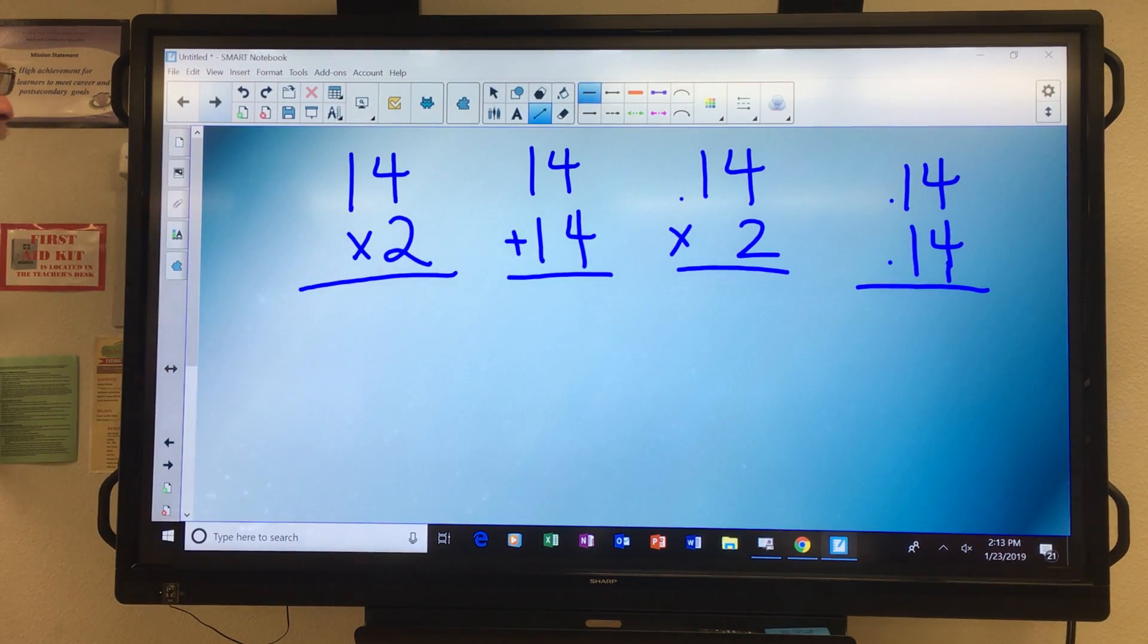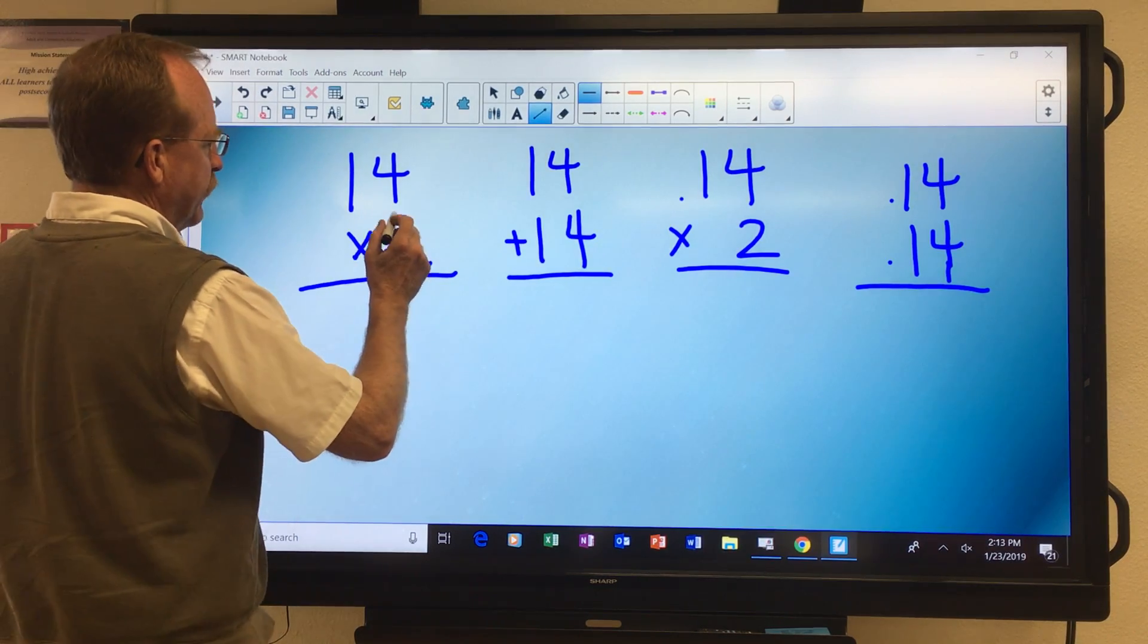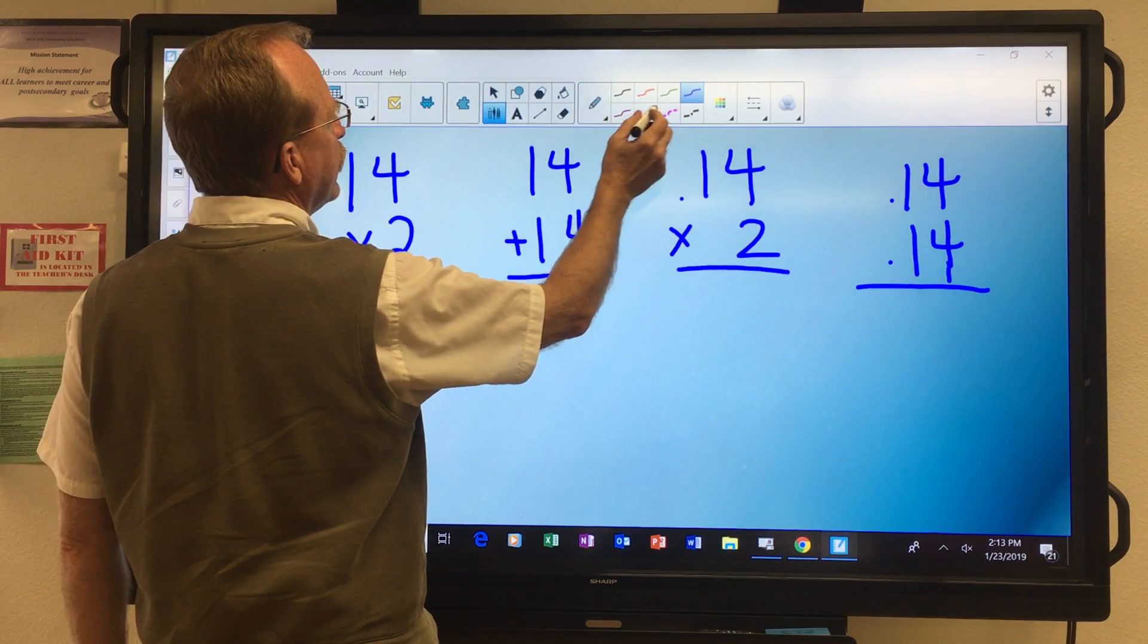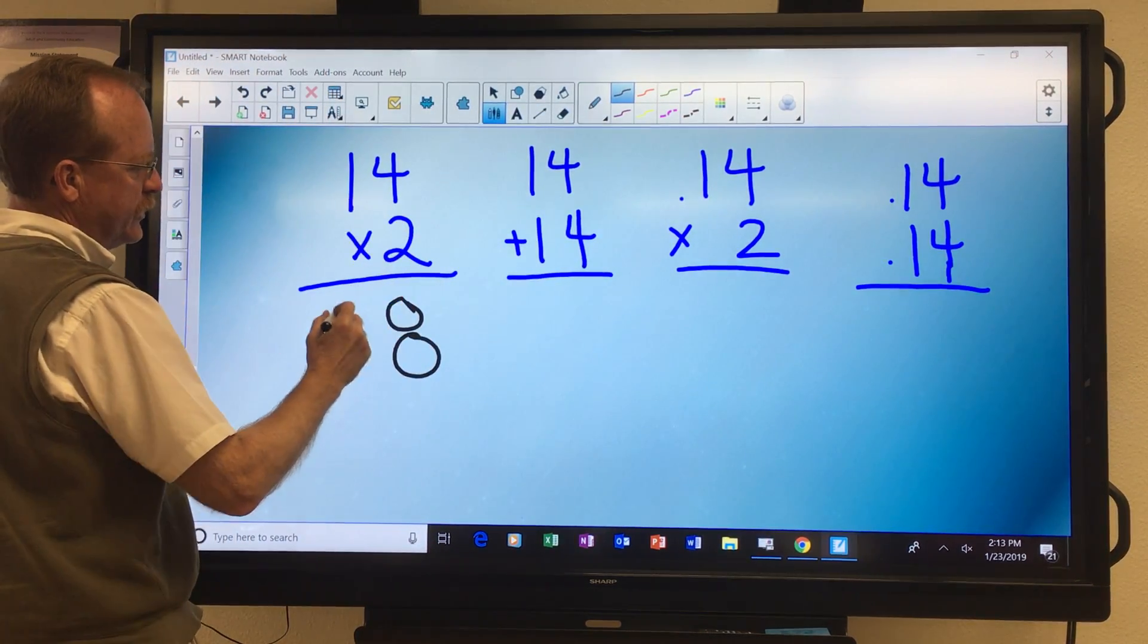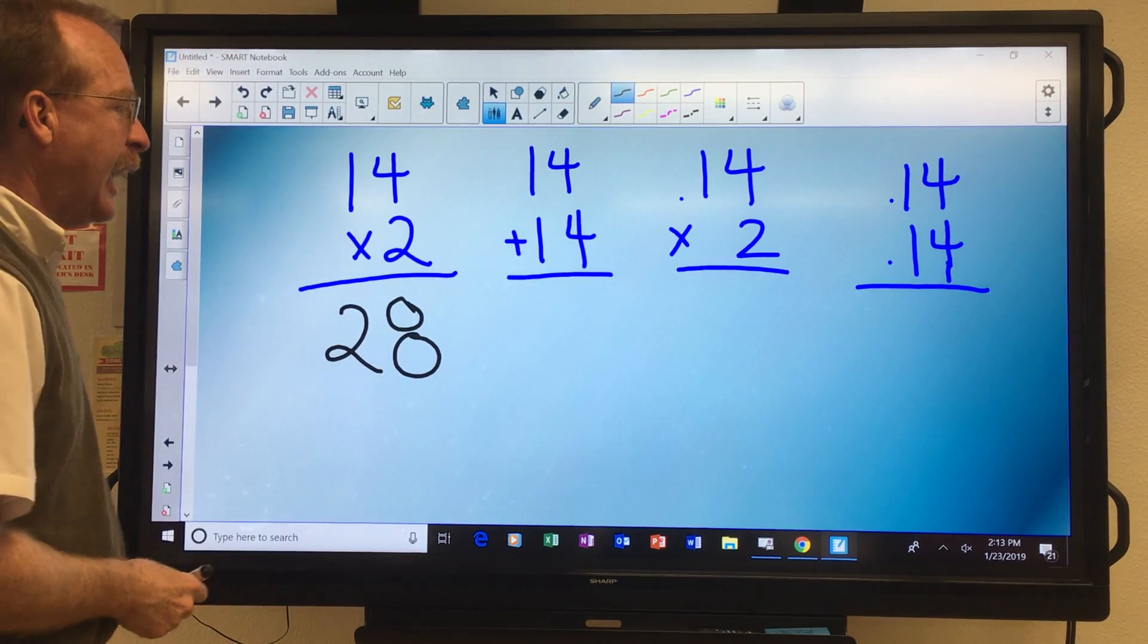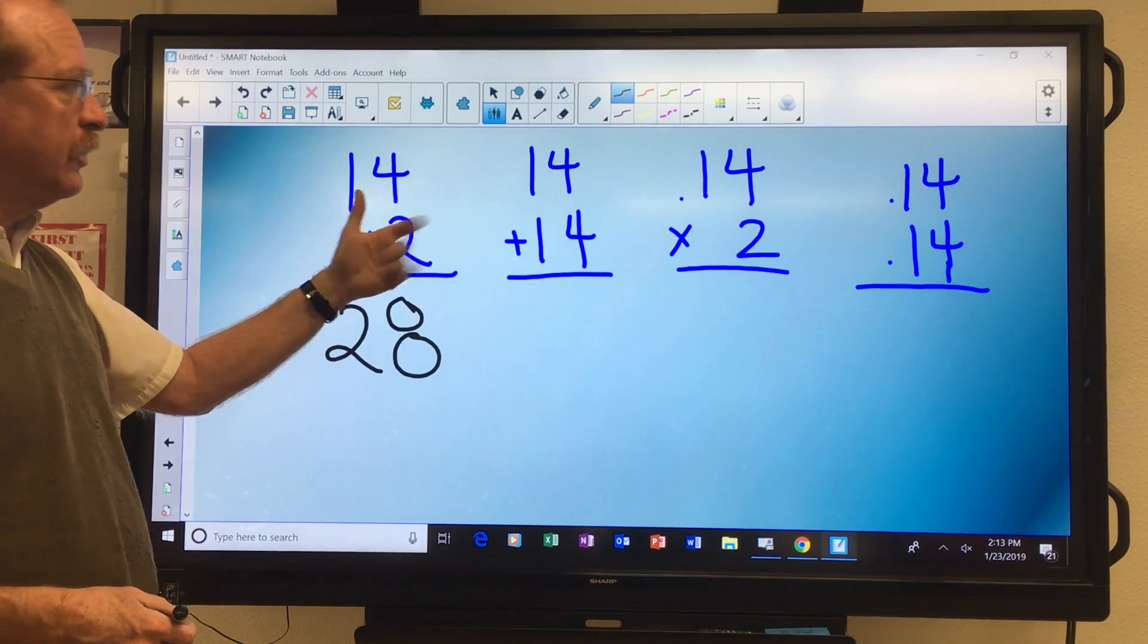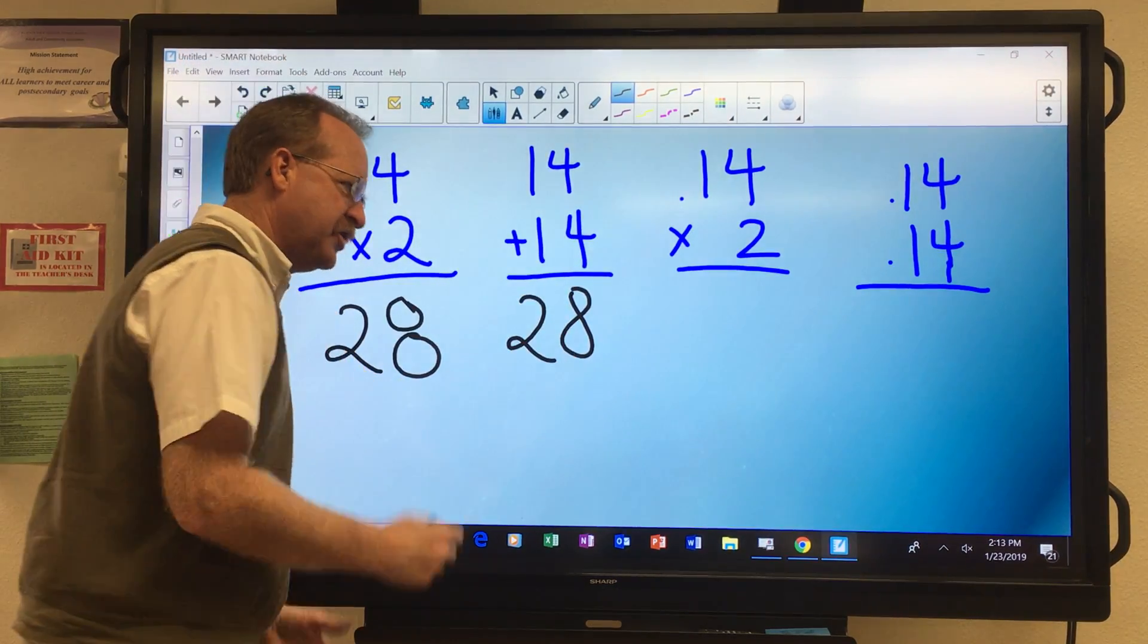If you have to multiply just regular whole numbers, you do it this way. 2 times 4 is 8, let me switch to a pen here, so this is 8, 2 times 1 is 2, and so my answer is 28. Sorry about the snowman there. That's really the same thing, 2 times 14 is the same thing as 14 plus 14. So 8, 28, same answer.